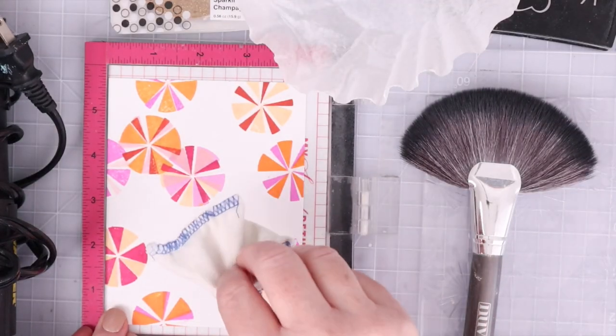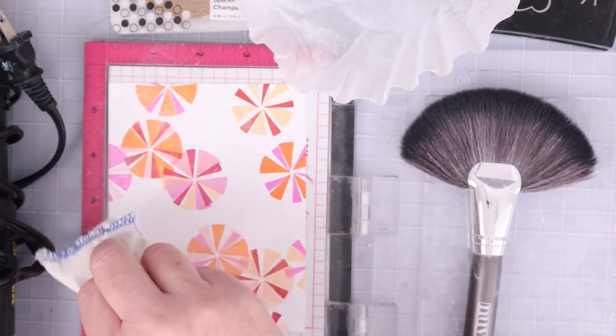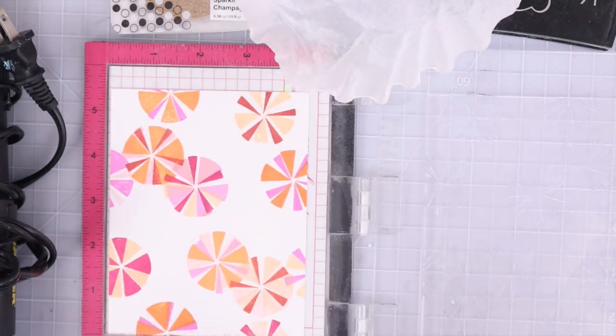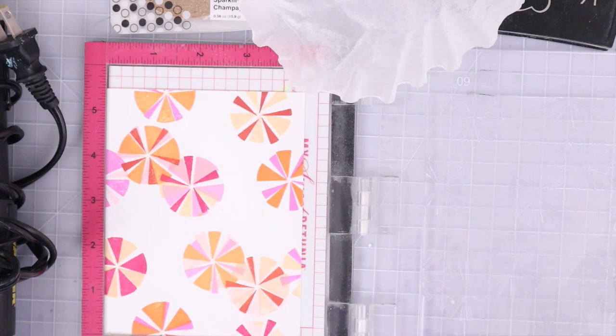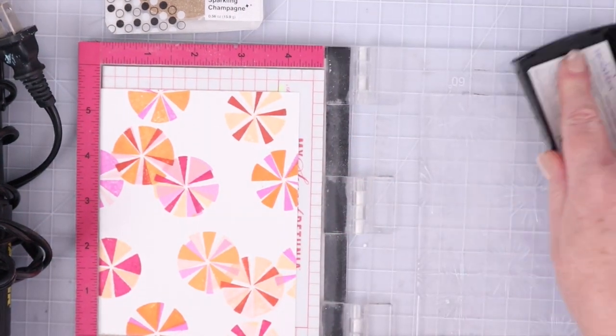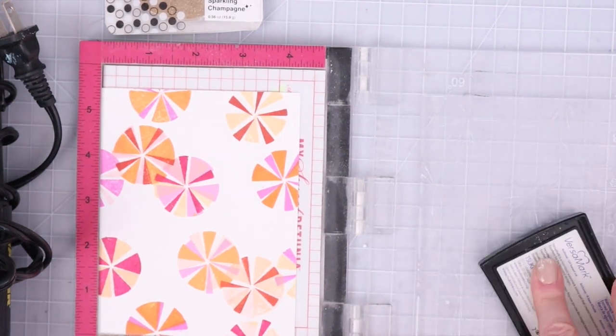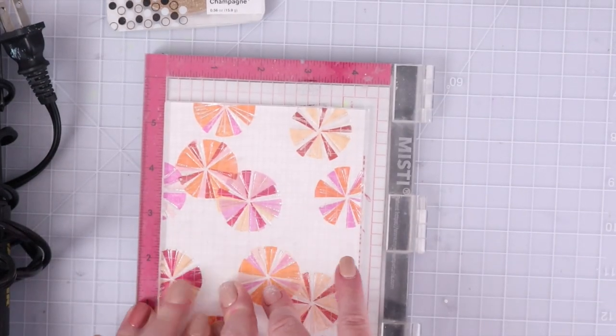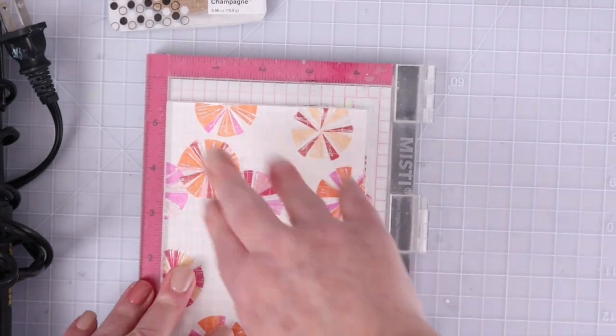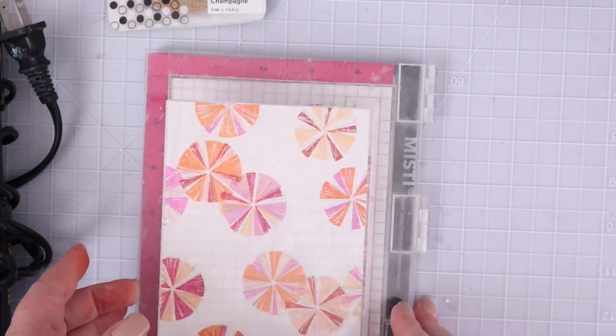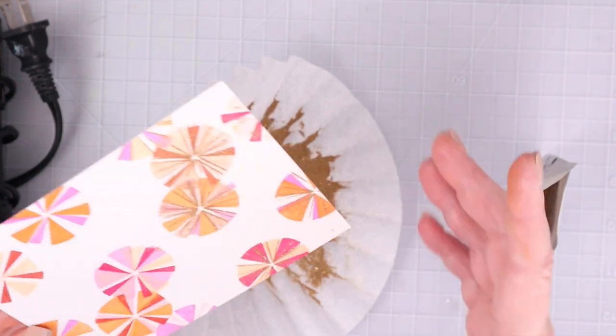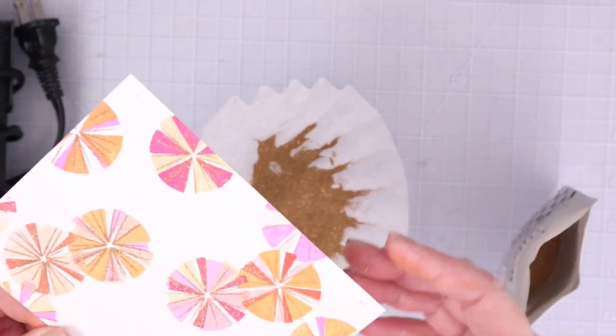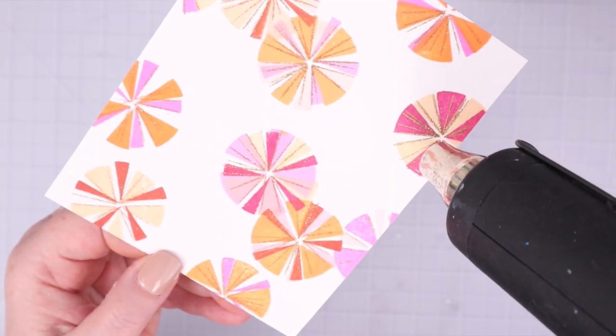Once all the colorful stamping was done, I put the panel back inside my mini MISTI and treated the entire panel with anti-static powder and swept away the excess with my Tonic Studios brush. Then I inked up the large stamp with Versamark ink. I was sure to really ink the stamp up well because I had a feeling I needed to get this all done in one shot or risk getting a shifted image.